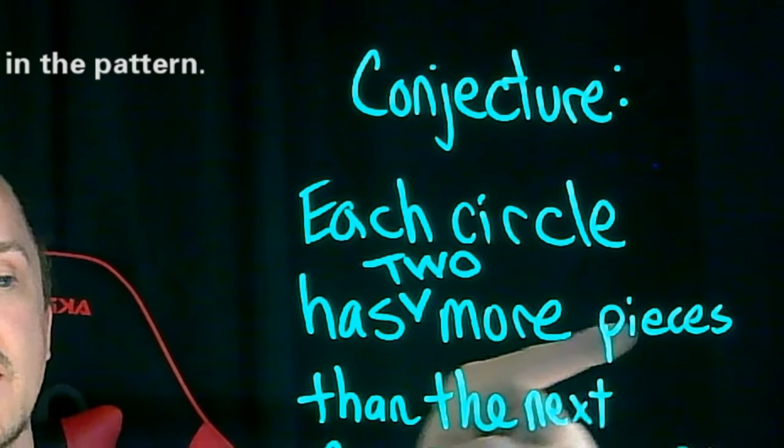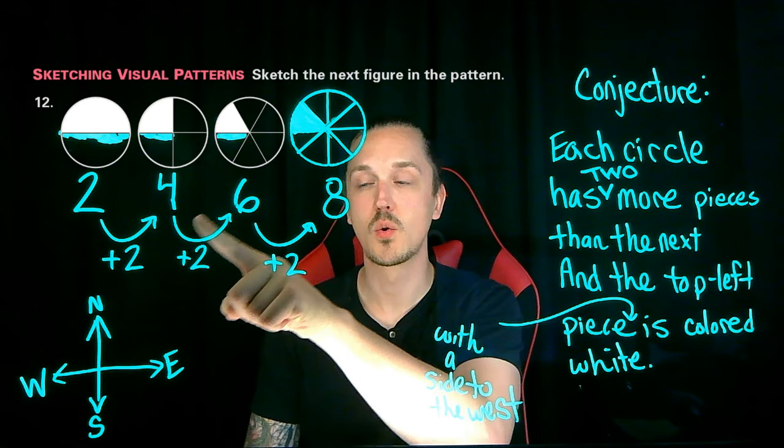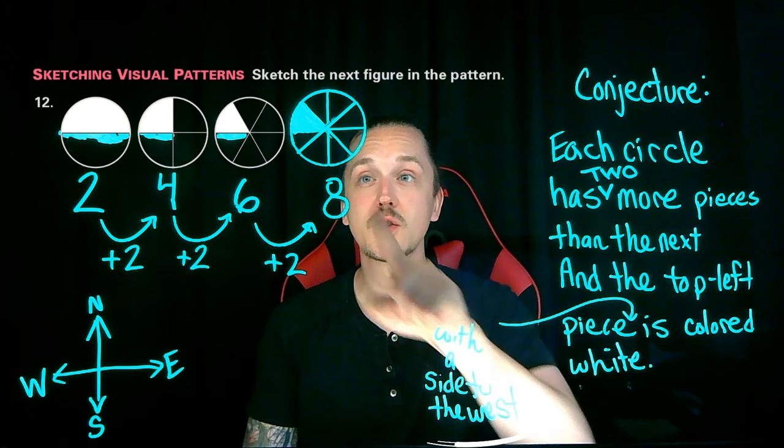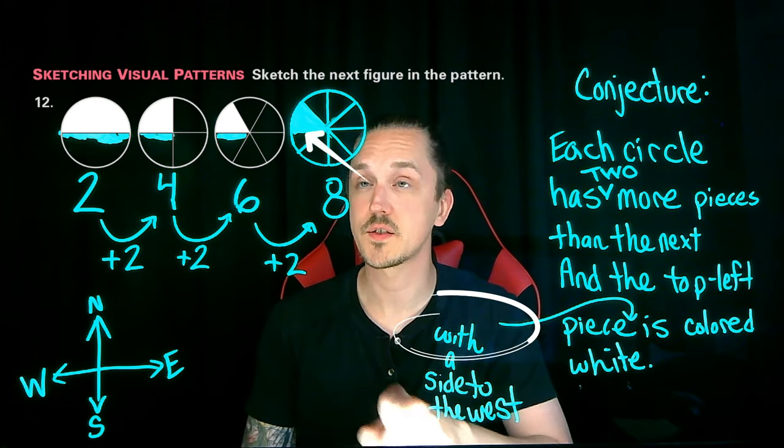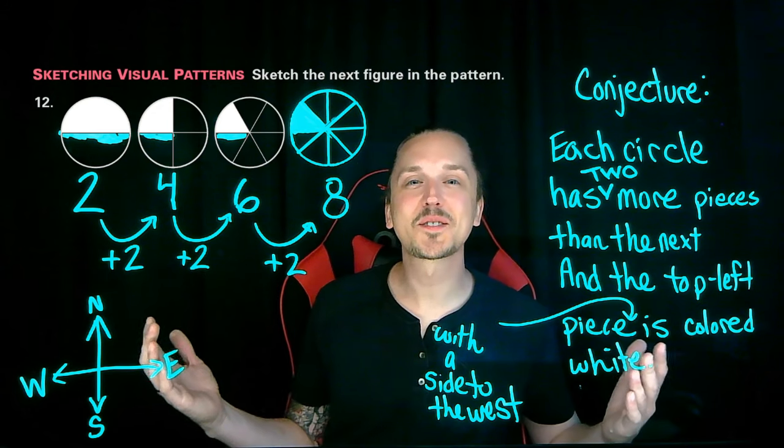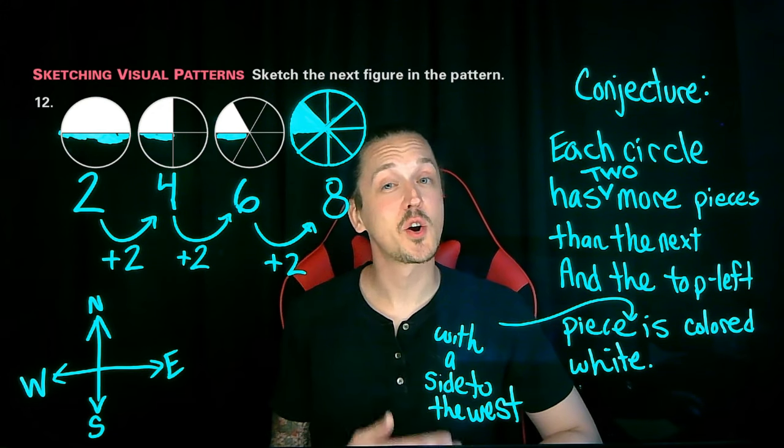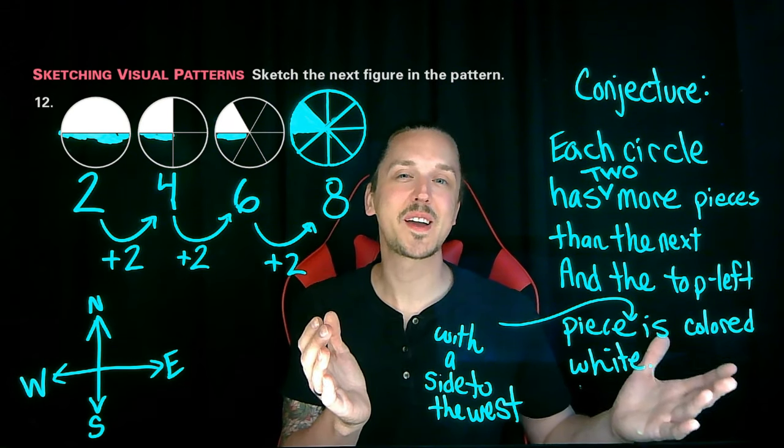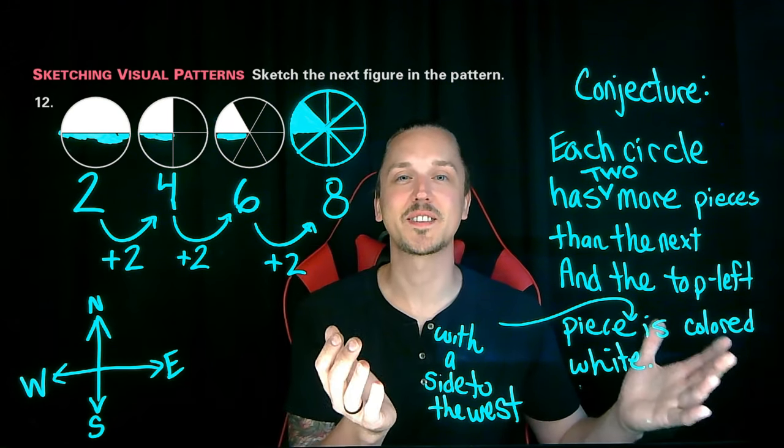Let's give it another read and confirm it with our sketch. Each circle has two more pieces than the next: two, four, six, eight. That's correct. And the top left piece with a side to the west is colored white. Wow, it looks like we've done it. Not only have we completed our instructions, which were to sketch the next figure in the pattern, but we also created a solid conjecture to go along with that sketch.